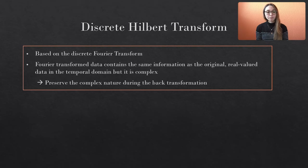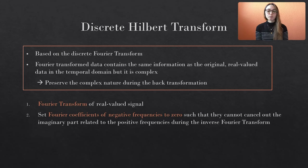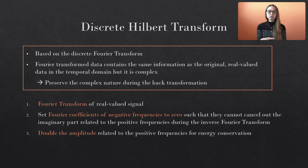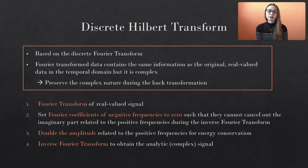After Fourier transforming the data, we set all Fourier coefficients that are related to negative frequencies to zero. Since the negative frequencies serve the purpose of eliminating imaginary components during the transformation back into the temporal domain, their removal allows us to preserve the imaginary parts related to the positive frequencies. We also have to double the amplitudes related to the positive frequencies for energy conservation. Then we perform the inverse Fourier transform and end up with an analytic signal that contains exactly the same information as the real-valued data we started with.